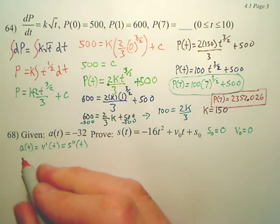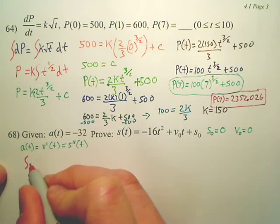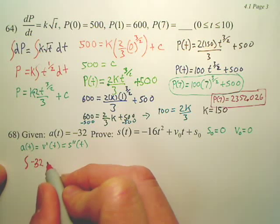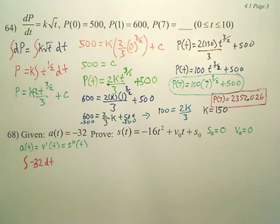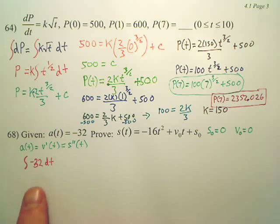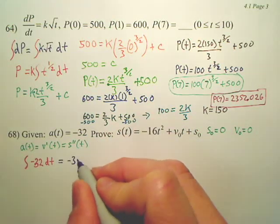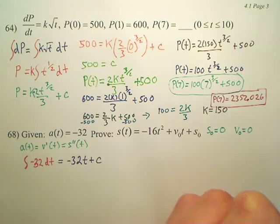Let's set up an integral. The integral of negative 32 dt. I want to integrate this. Acceleration is equal to this. I'm going to integrate this, work my way down. What's the integral of that going to be? Well, the integral of this is going to be negative 32t plus c.